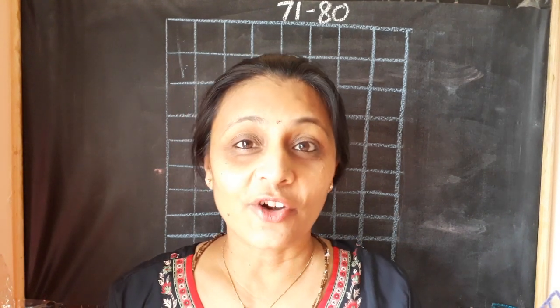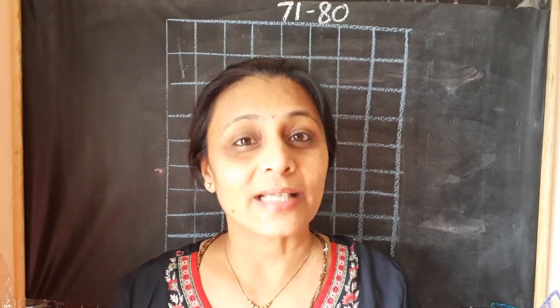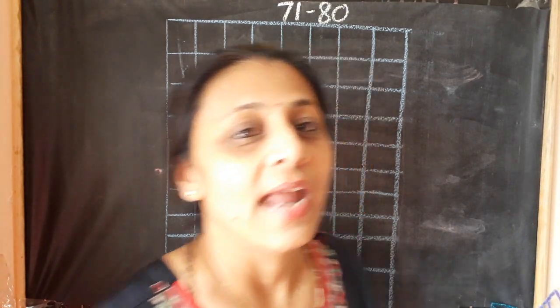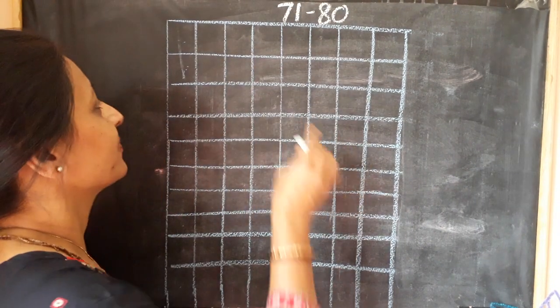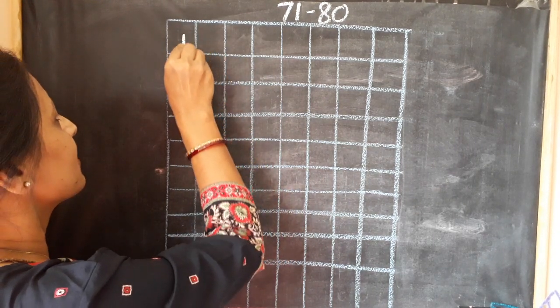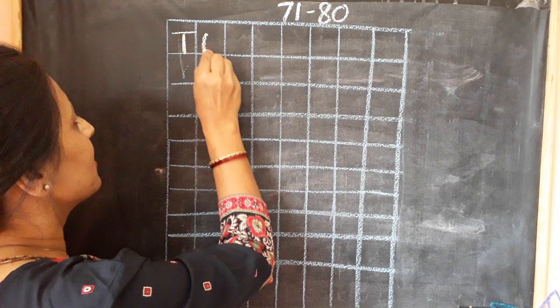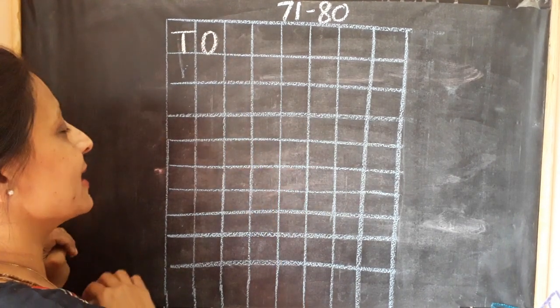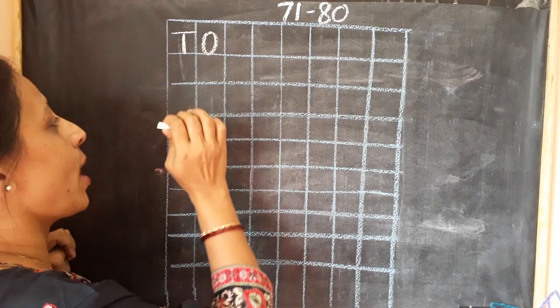Children, are we all ready to write numbers 71 to 80? Let's start. Everyone pay attention on the board. First of all, we are going to write T and O. As you know, T represents 10s and O represents 1s.